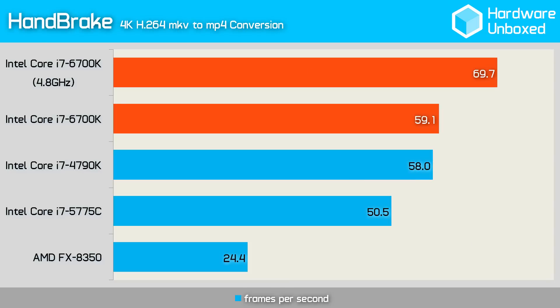Finally we assessed performance with the Handbrake conversion test, where the original 6700K already led in its class. It was able to average more than 10 frames per second higher, which made for just shy of an 18% performance increase.